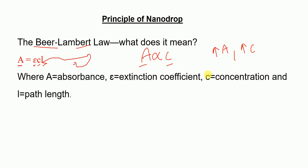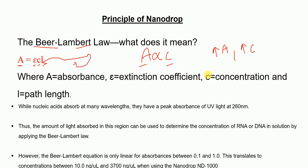Nucleic acids, although they absorb many wavelengths, they have a peak absorbance of UV light at 260 nanometers. RNA and DNA both have a peak absorbance at 260 nanometers. Therefore, the amount of light absorbed in this region can be used to determine the concentration of RNA or DNA in a solution by applying the Beer-Lambert law.